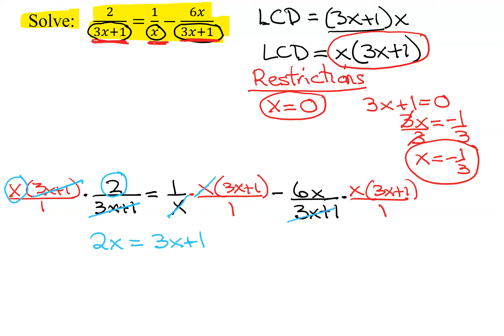And in my last term, the 3x plus 1 reduces. So I'm going to get 6x times x. So I'm going to get minus 6x times x is 6x squared.